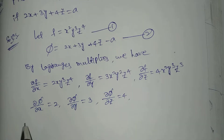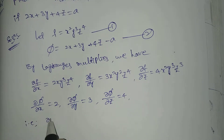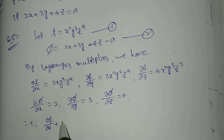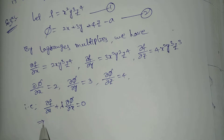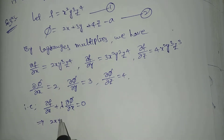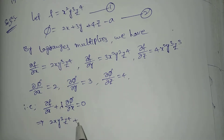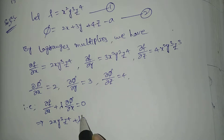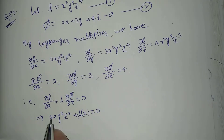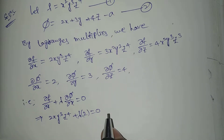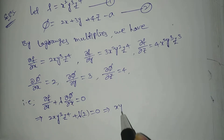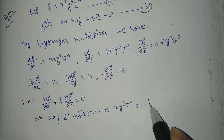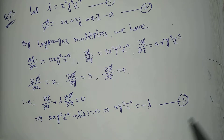By Lagrange's condition: ∂f/∂x plus λ times ∂φ/∂x equals 0. That gives 2x y cubed z to the power 4 plus λ times 2 equals 0. Taking 2 as common and moving to the right side, we get x y cubed z to the power 4 equals minus λ. This is equation number 3.